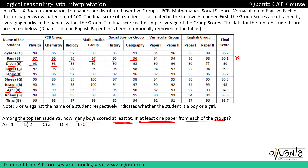For Dipan: scores are 98, 98, 98, 95, 96, 95, 96, 94 and the missing score was 97. In Vernacular he scores 96, which is ≥95 in one subject — so Dipan is counted. For Sagnik: 97, 98, 99, 96, 96, 98, 94, 97. In Vernacular he scores at least 95 in paper 2, so counted. But in English he scores less than 95 in both papers — so Sagnik is not counted. Checking all remaining boys similarly, only Dipan satisfies this condition — option A is the correct answer.